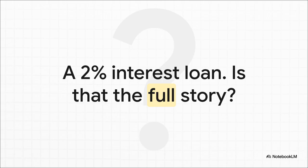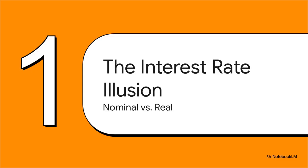Picture this: you walk into a bank and they offer you a loan with a 2% interest rate. That sounds amazing, right? It's a low number, seems super straightforward. But is that 2% the whole story? Is that really what you're going to end up paying? Not always. And that's what brings us to what I like to call the interest rate illusion. The number you see on the poster or in the ad isn't always the complete picture of what your loan is going to cost you. To see right through this illusion, you've got to understand the two main types of interest rates: the nominal rate and the real rate.